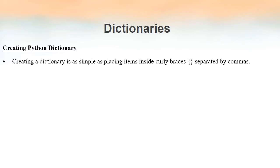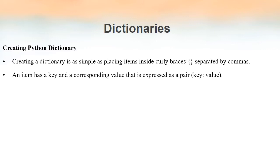Now we will see how to create a dictionary in Python. Creating a dictionary is very easy: open a pair of curly brackets, write key-value pairs inside, and separate each pair from the other by means of a comma. Within each pair, write the key, then a colon, then the value. Each key must be unique and of an immutable data type — strings, numbers, or tuple — while values can be of any data type.